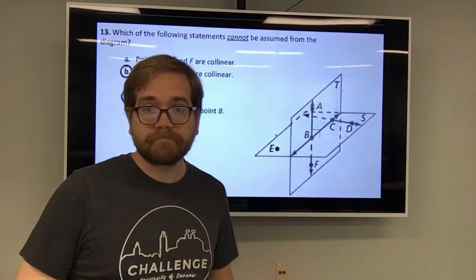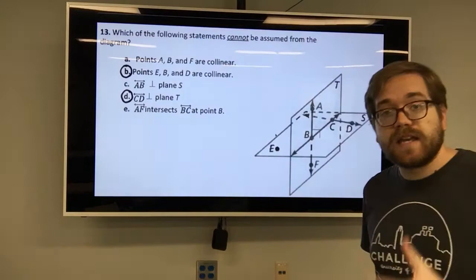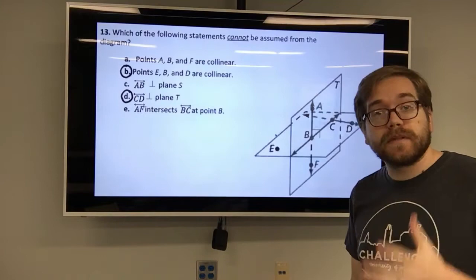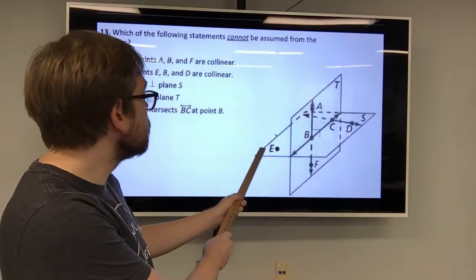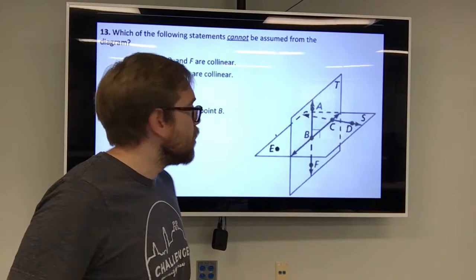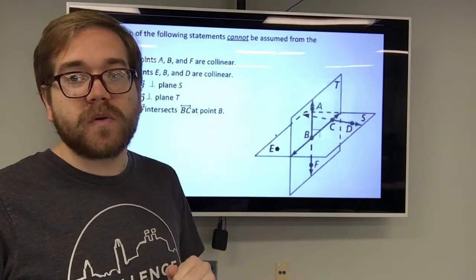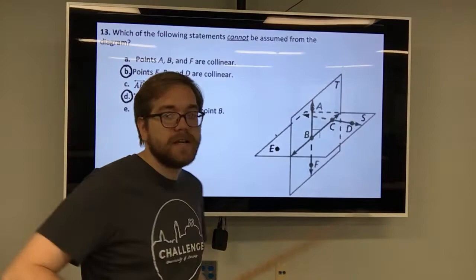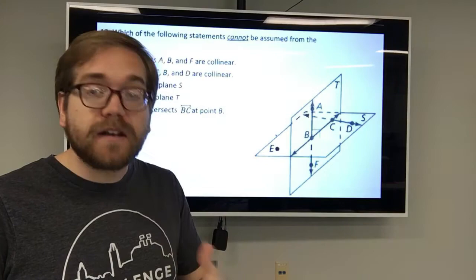What about points E, B, and D — are they collinear? Well, we know we won't be able to determine that from this diagram. Here's E off in the corner, here's B, and here's D. Do you see a line running through all three of those points? No. So that means they're not collinear, not on the same line, and we cannot determine it from this diagram because it's not giving us that information.